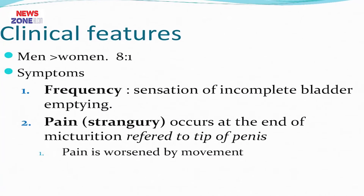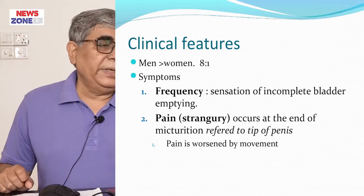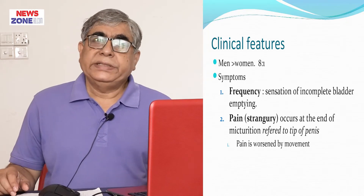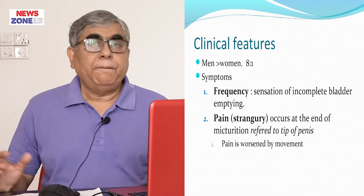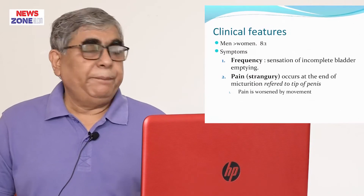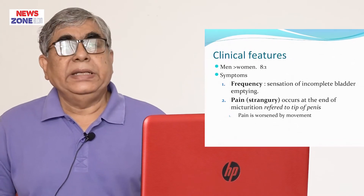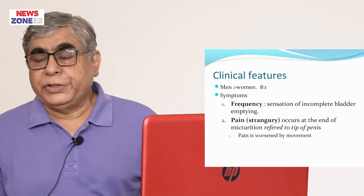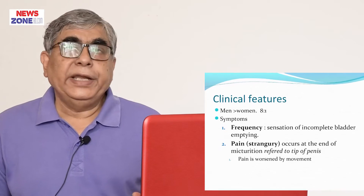Due to bladder irritation, the patient experiences increased frequency of urination and a sense of incomplete bladder emptying — the desire to urinate is not satisfied and there is still some urine remaining. There is also pain called strangury, which occurs at the end of micturition and typically refers to the tip of the penis.